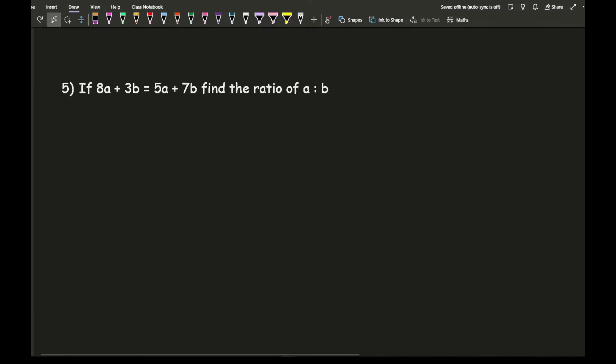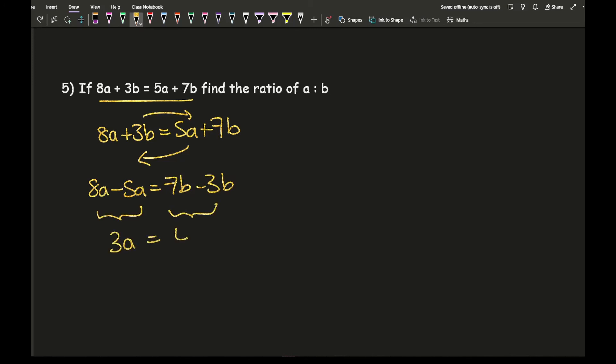Moving on to our last example. It says if 8a plus 3b equals 5a plus 7b, find the ratio of a to b. What I need to recognize is we've got letters, a's and b's, all on different sides. What I want to do first is make a's onto one side. I've got 8a plus 3b equals 5a plus 7b. If I take the a over to this side and the b over to this side, I end up with 8a minus 5a equals 7b minus 3b. This simplifies to give me 3a and this simplifies to give me 4b.